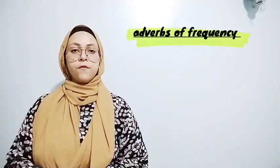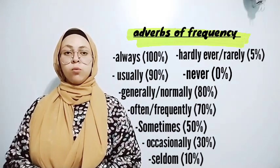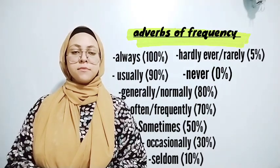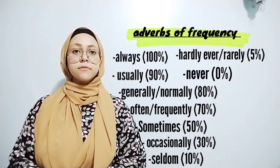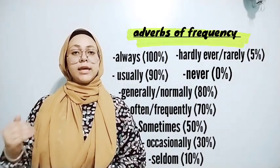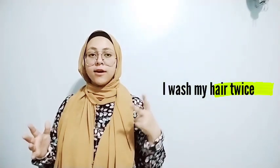We have two methods to identify habitual or everyday activities. First, adverbs of frequency: always, usually, generally or normally, often or frequently, sometimes, occasionally, seldom, hardly ever or rarely, and never. The second method is once plus the time — for example, I wash my hair twice a week.